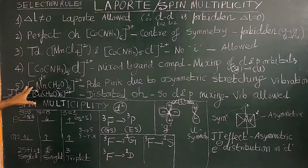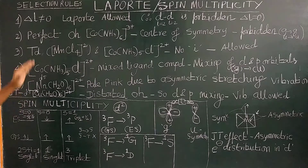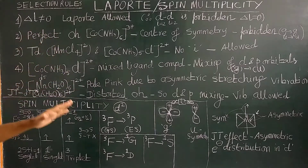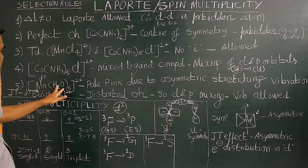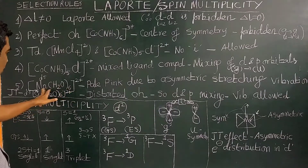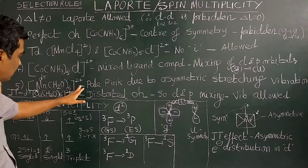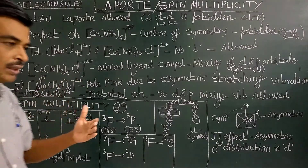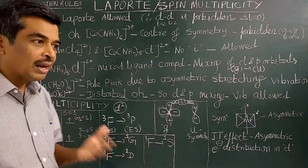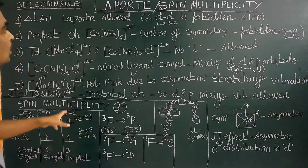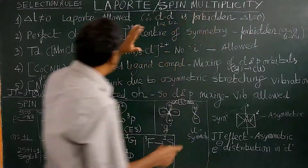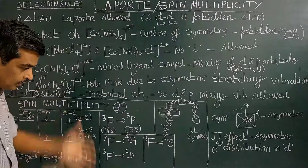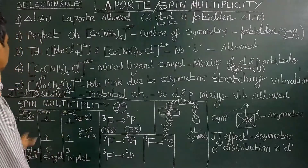Now let us see another characteristic of the Laporte orbital selection rule. The manganese aqua complex — [Mn(H₂O)₆]²⁺ — you know that it should be colorless, because according to Laporte, the d-d transition is forbidden.